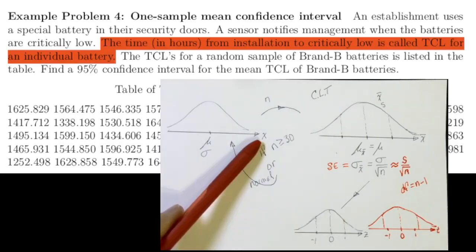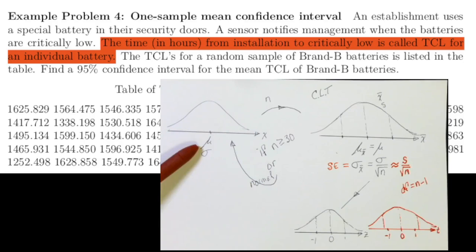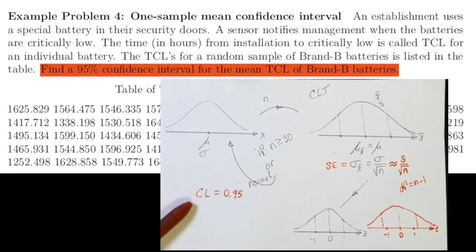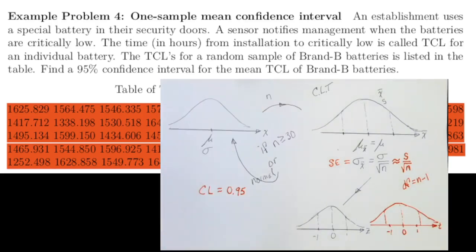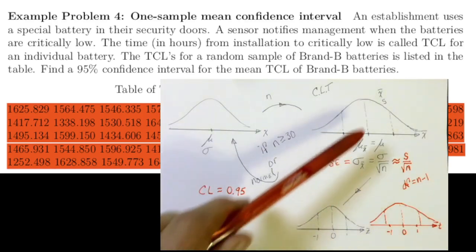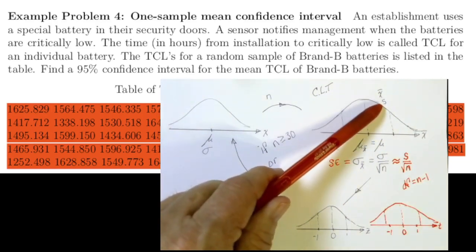The variable we're interested in is the TCL for individual brand B batteries. The population parameter that we're concerned about is the mean of those TCL values. We want to find a confidence interval at a 95% confidence level for that mean. We'll need to find the sample size by counting how many items are in the sample. Once we've wrangled the data into a vector, we'll easily be able to find the sample mean and the sample standard deviation.